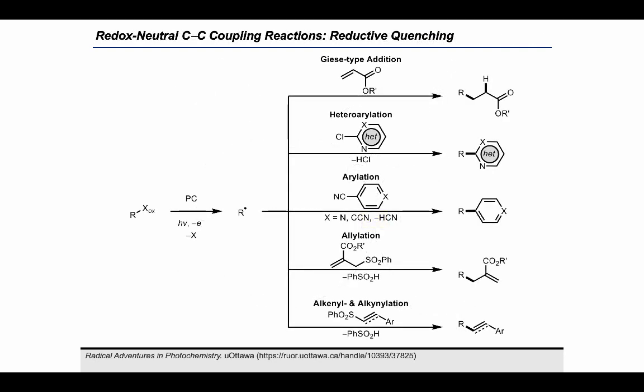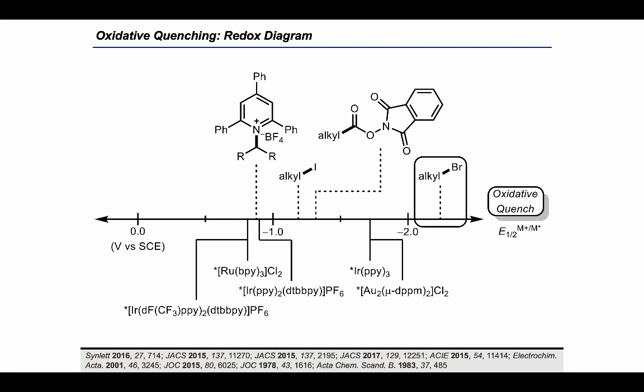Using this strategy, a variety of oxidizable substrates can generate alkyl radicals and undergo transformations such as heteroarylations, arylations, allylations, as well as alkynyl and alkynylarylations. These reactions share a common intermediate that, though different in structure, is similarly able to undergo further reduction to generate the desired products. Redox neutral photocatalyzed pathways and anode-cathode paired electrolysis are among the most waste-limiting strategies available.